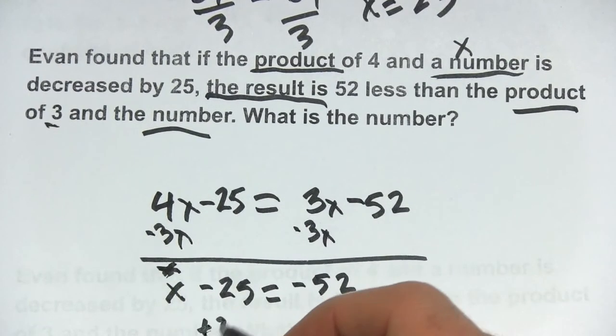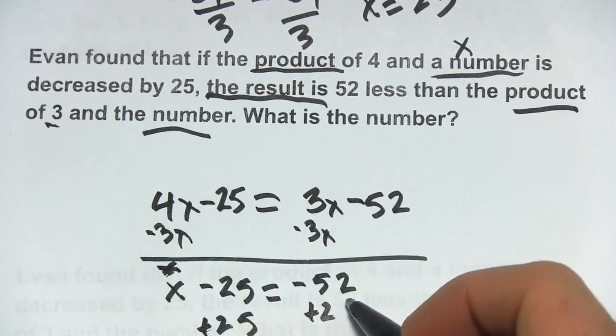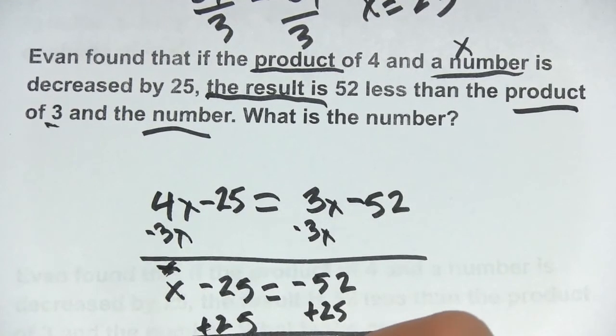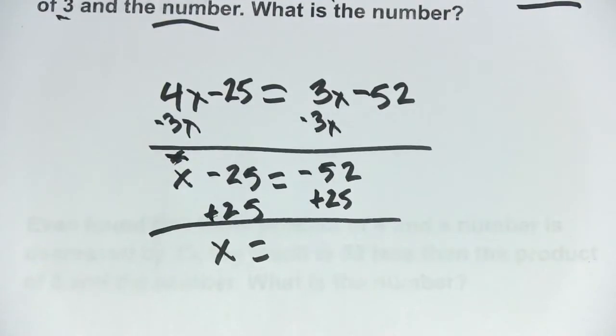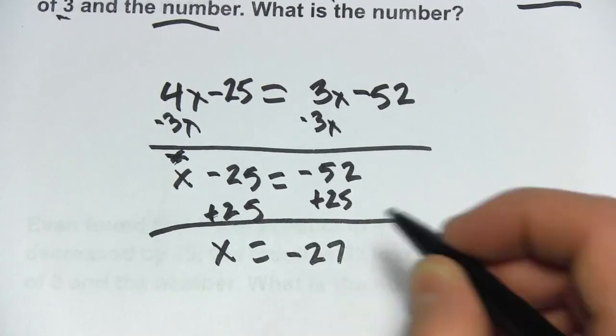And then we'll add 25 to both sides to get x alone. And we get x equals negative 27.